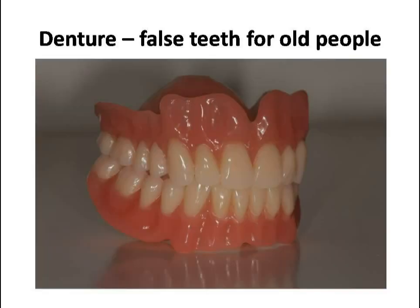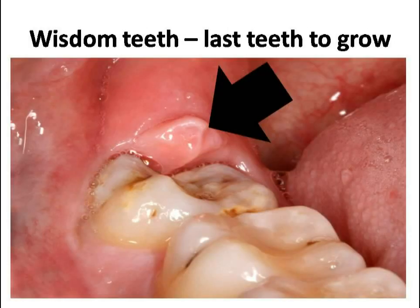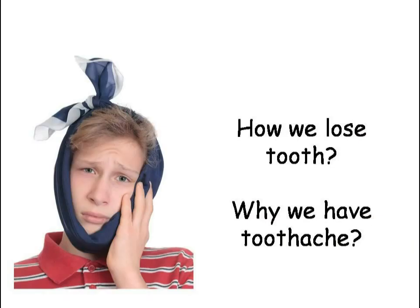Many old people use false teeth — that set of false teeth is called a denture. So start taking care of your teeth so that you don't start losing them at an early age. The last teeth to grow are your wisdom teeth. You get wisdom teeth around the age of 20, and many people feel terrible pain when wisdom teeth come out.